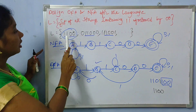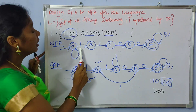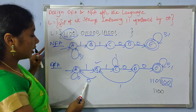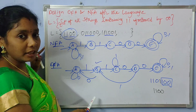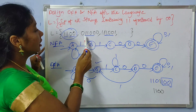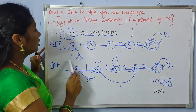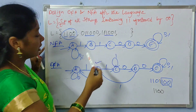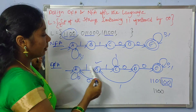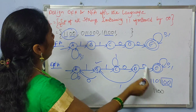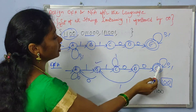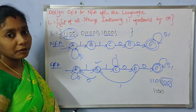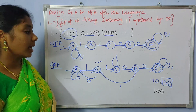First let us check the string 1100 in the NFA — it is accepted. Let us check in the DFA — 1100 is also accepted. Now let us check the second string 0, double 1, double 0, 0 — it is accepted in the NFA. Similarly 0, double 1, double 0, 0 is accepted in the DFA. Like that we have NFA and DFA for accepting the strings under the given language.